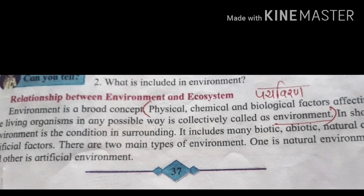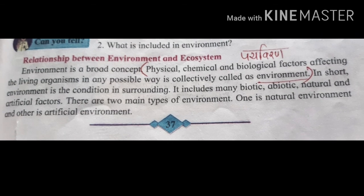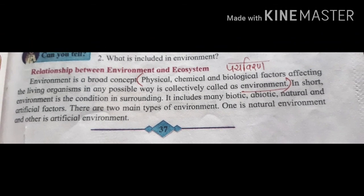Relationship between environment and ecosystem: environment is a broad concept. Physical, chemical, and biological factors affecting the living organisms in any possible way are collectively called as environment. In short, environment is the condition of its surroundings. It includes many biotic, abiotic, natural, and artificial factors.